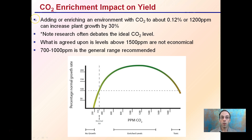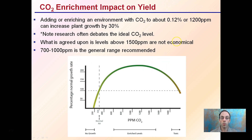CO2 enrichment can impact yield. Enriching an environment with CO2 to about 0.12% or 1200 parts per million can increase plant growth by 30%, though research often debates the ideal CO2 level and many consider 1200 too high. Typically, the range of 700 to 1200 ppm is where you see that increase in yield potential. What is agreed upon is that levels above 1500 ppm are not economically viable. The general recommended range is 700 to 1000 ppm — some run as high as 1200 depending on their controller unit — but above 1500 ppm we see reduced growth, and you're simply wasting money on CO2 that's not beneficial to the plant.